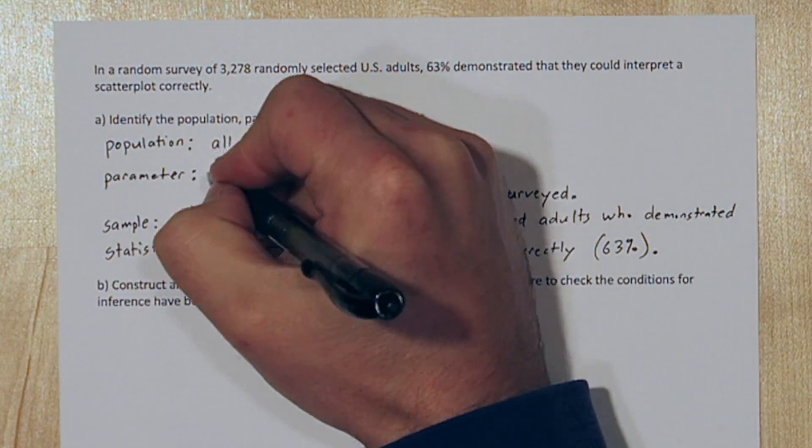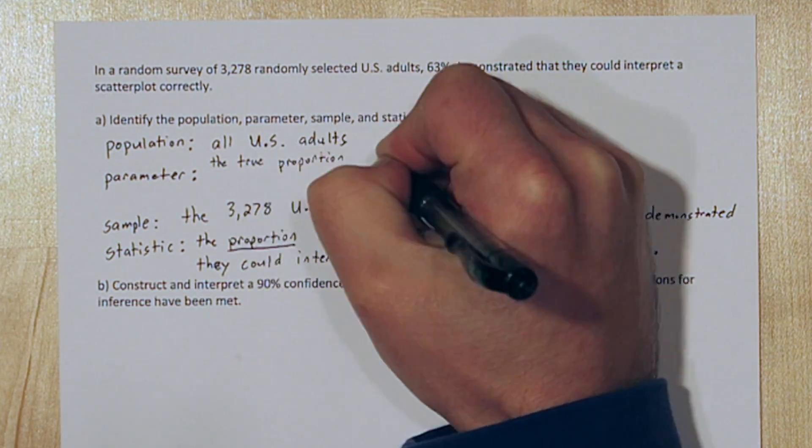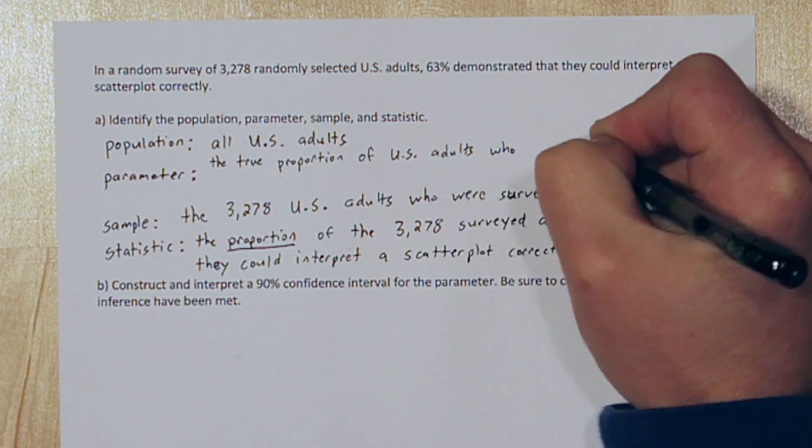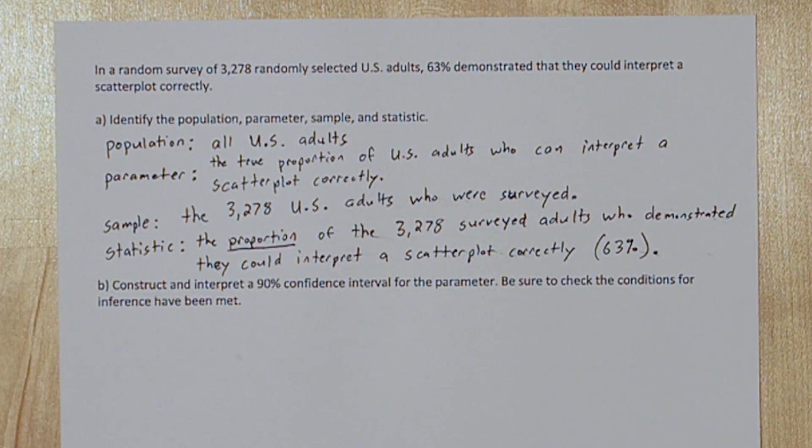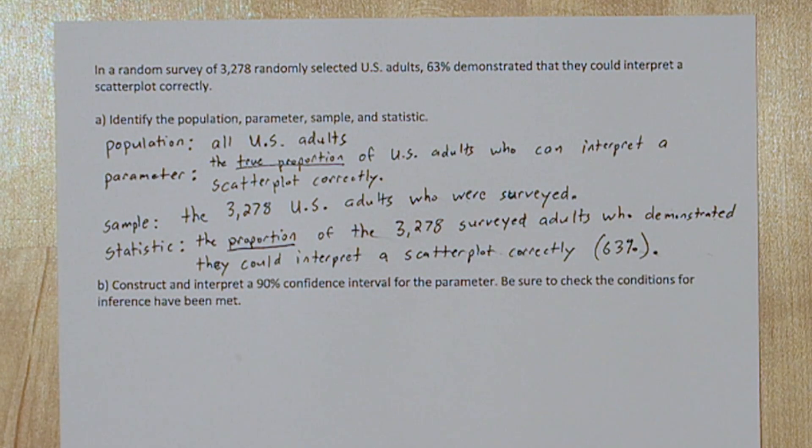Now let's jump back up to the parameter. The parameter is like the statistic but it's going to be the true proportion for all the U.S. adults who can interpret a scatter plot correctly. Population and parameter both start with P. Also sample and statistic both start with S.